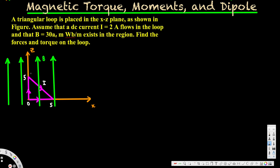Let's name the vertices: this is O, this is P, and this is Q. For segment OP, it goes in the z direction with length 5. The magnetic field is also in the z direction. The given information: current = 2 ampere and magnetic field = 30az milliTesla per meter.